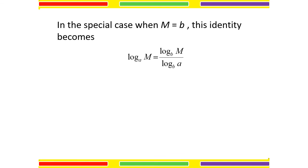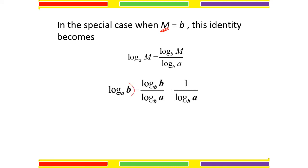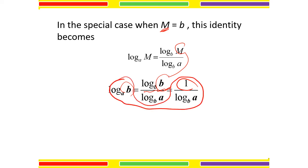In the special case where M equals B, the identity becomes: log base A of B equals log base B of B divided by log base B of A. Since log base B of B equals 1, we get log base A of B equals 1 divided by log base B of A. This property can be used to solve certain questions.